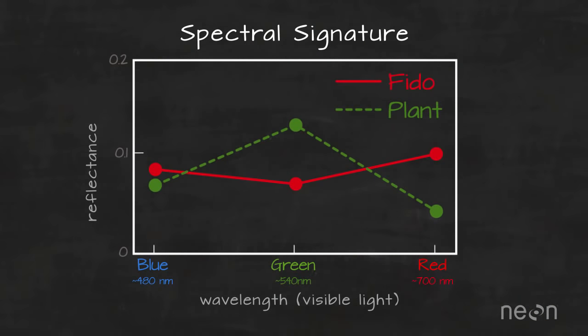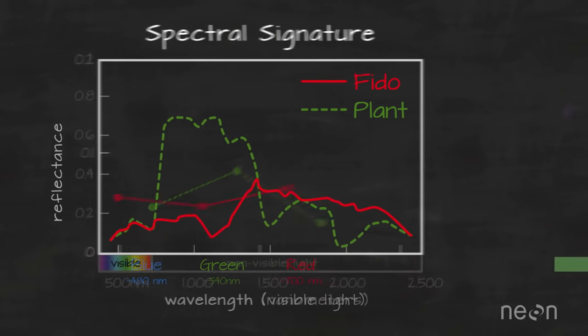Most cameras record light in the visible, or red, green, and blue bands. However, plants, dogs, and other objects on the Earth also reflect light that we can't see with our eyes.